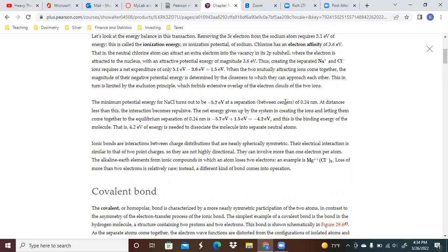separation of 0.24 is minus 5.7 plus 1.5, or minus 4.2 eV. And this is the binding energy of the molecule. In other words, 4.2 eV of energy is needed to dissociate the molecule into separate neutral atoms.